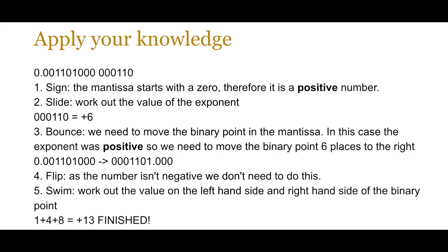Now why am I using these terms: sign, slide, bounce, flip, swim? That's because some people find it very difficult to remember the algorithmic steps, so these mnemonics or word-based patterns make it easier to remember. Remember to check the sign first. Make sure that you slide all the way to work out the exponent. Make sure you bounce the binary point the required number of spaces left or right. If the sign was negative, then you flip - you do the 2's complement part - and finally you swim, which means working out the value on the left-hand side and the right-hand side of the binary point.